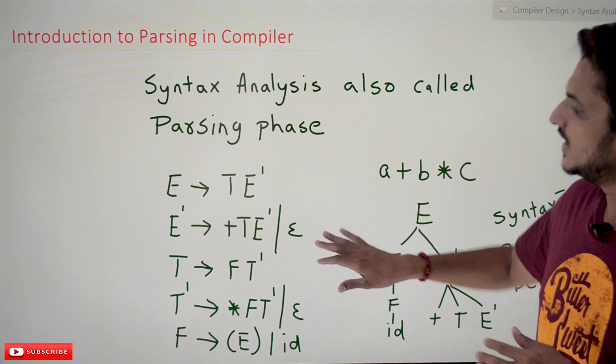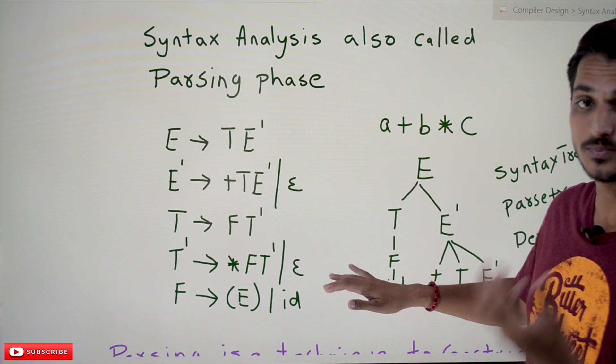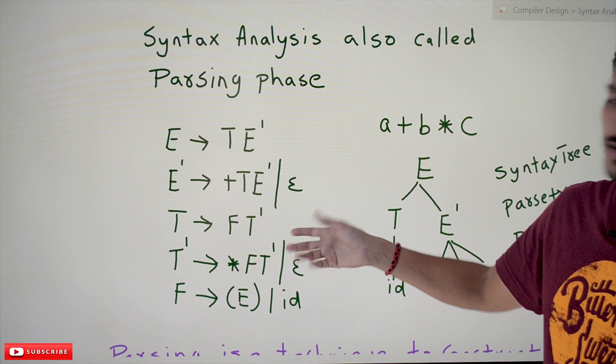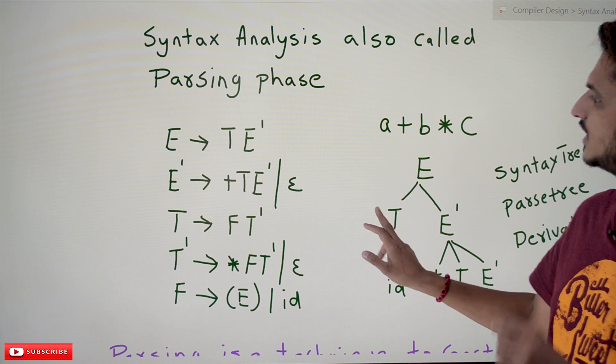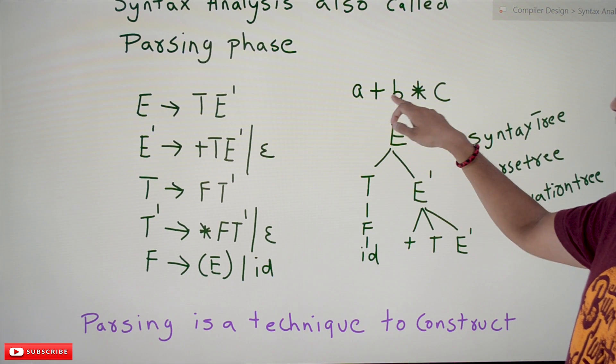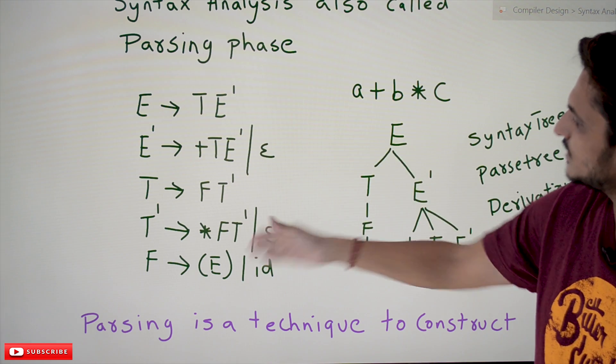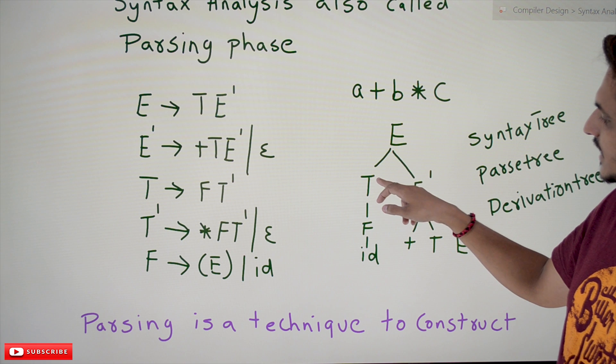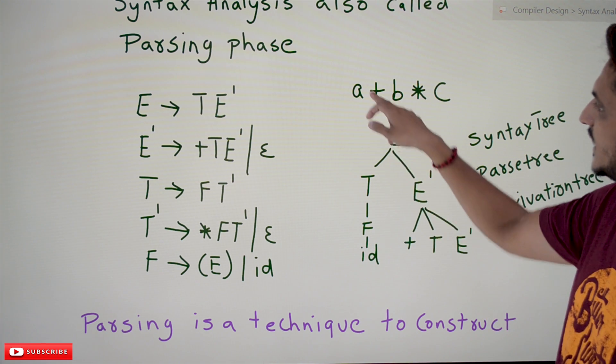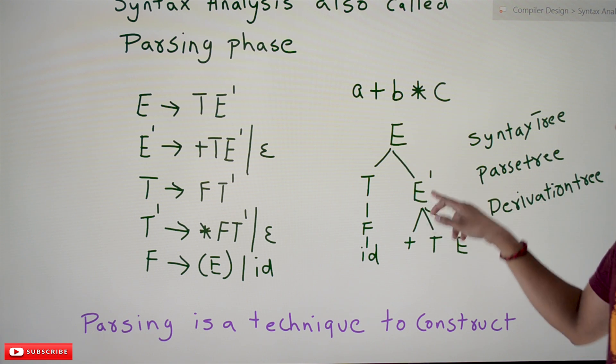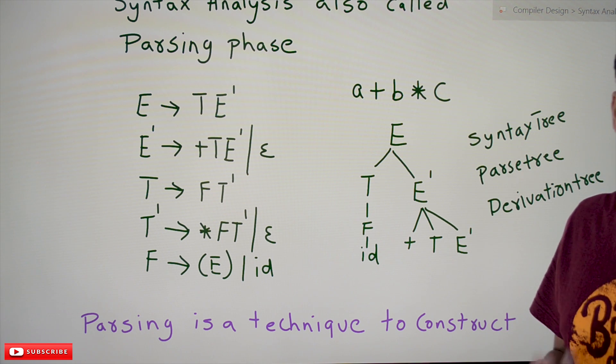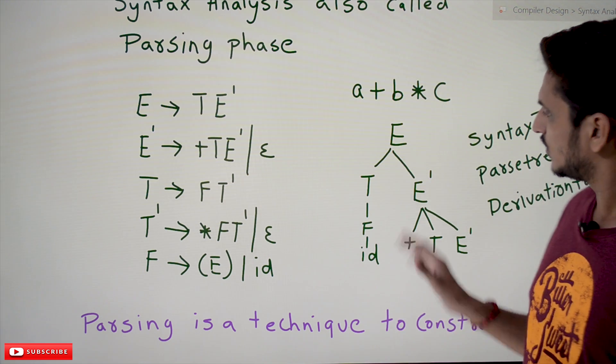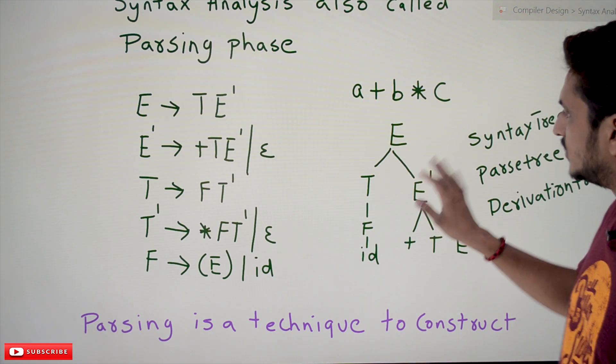Now coming to a quick refresh of syntax. How we do expression evaluation, identifying whether the expression is correct or not using this grammar. This grammar was already discussed in our previous class. This grammar is used to identify expressions. E → TE', if you want to identify this expression a + b * c, we are going to use this grammar. E is evaluated as E is expanded as TE'. T is expanded as F. F is going to identify the identifier. So a is identified. After that, E' is evaluated to identify plus, then TE'. Like this we are going to elaborate this grammar and identify whether the expressions are syntactically correct or not.